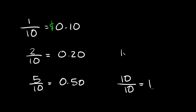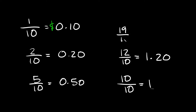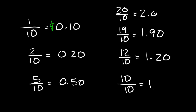If we had twelve over ten — that's an improper fraction — this would be a dollar and twenty cents. Nineteen over ten would be a dollar ninety. And twenty over ten would be the same thing as two dollars.